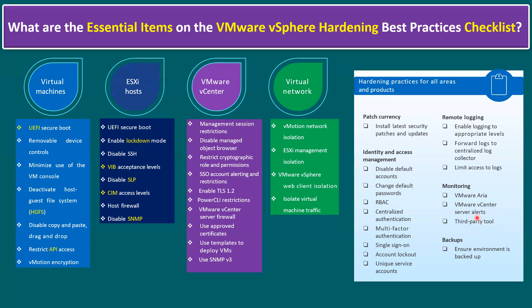Last but not least, within our hardening, another key item is backups. Ensure our environment is backed up regularly. We should maintain daily, weekly, monthly full backups, and also quarterly, half-yearly, and yearly backups. We should also perform associated restoration tests. This is the high-level overview of essential items on the VMware vSphere hardening best practices checklist. You can compare within your environment whether you are following all these checklist items in production. Some may be excluded or have exceptions depending on customer security regulations.